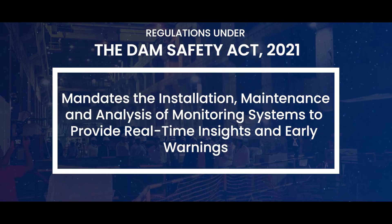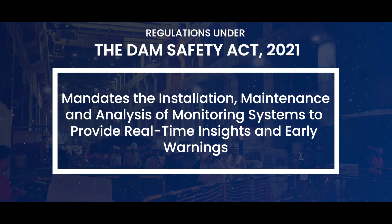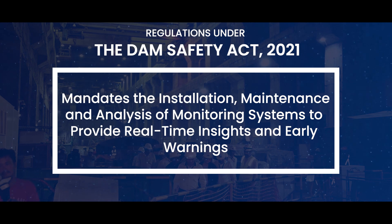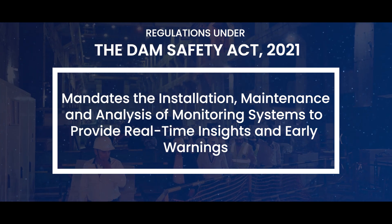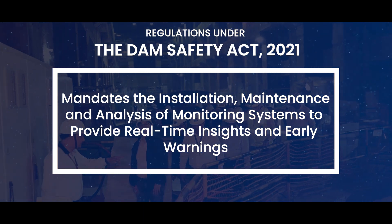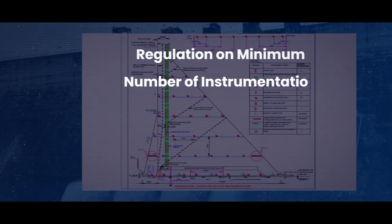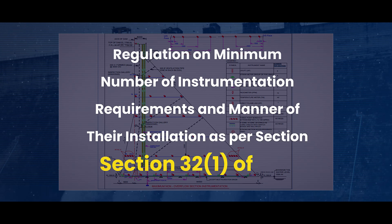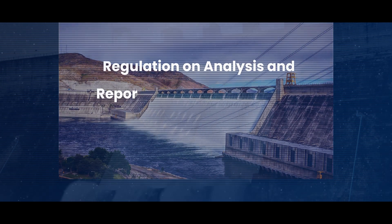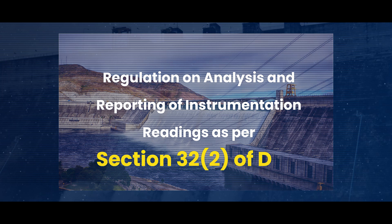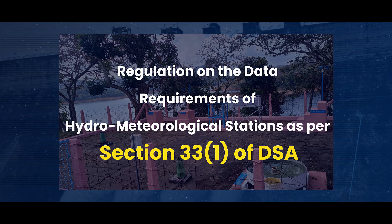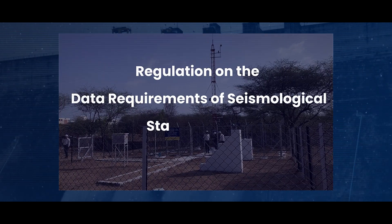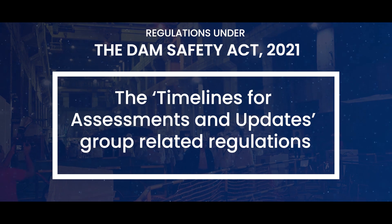The regulations on instrumentation and monitoring mandate the installation, maintenance and analysis of monitoring systems to provide real-time insights and early warnings. These cover the minimum number of instrumentation requirements and manner of their installation, analysis and reporting of instrumentation readings, data requirements of hydro-meteorological stations, and data requirements of seismological stations.